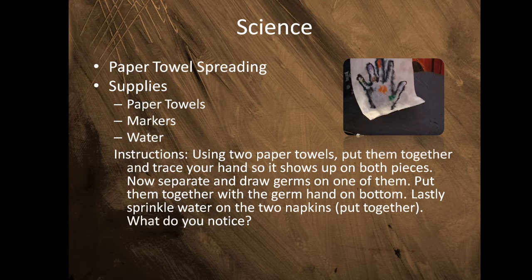So using two paper towels, you're going to put them together and trace your hand so it shows up on both pieces. Now you're going to separate them and draw germs on one of them. Then you're going to put them together again with the germ hand on bottom. Lastly, you're going to sprinkle water on the two napkins. Make sure they're put together and then you're going to see what you noticed.